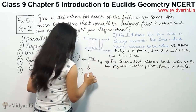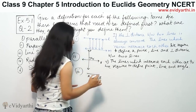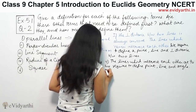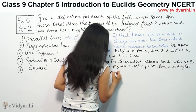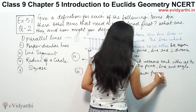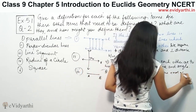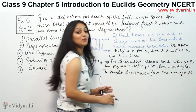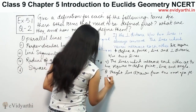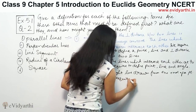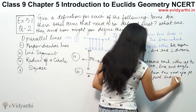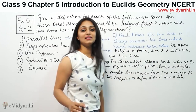Part three is line segment. A line segment is a straight line drawn from one endpoint to another. To define a line segment, we require to define a point and a line.